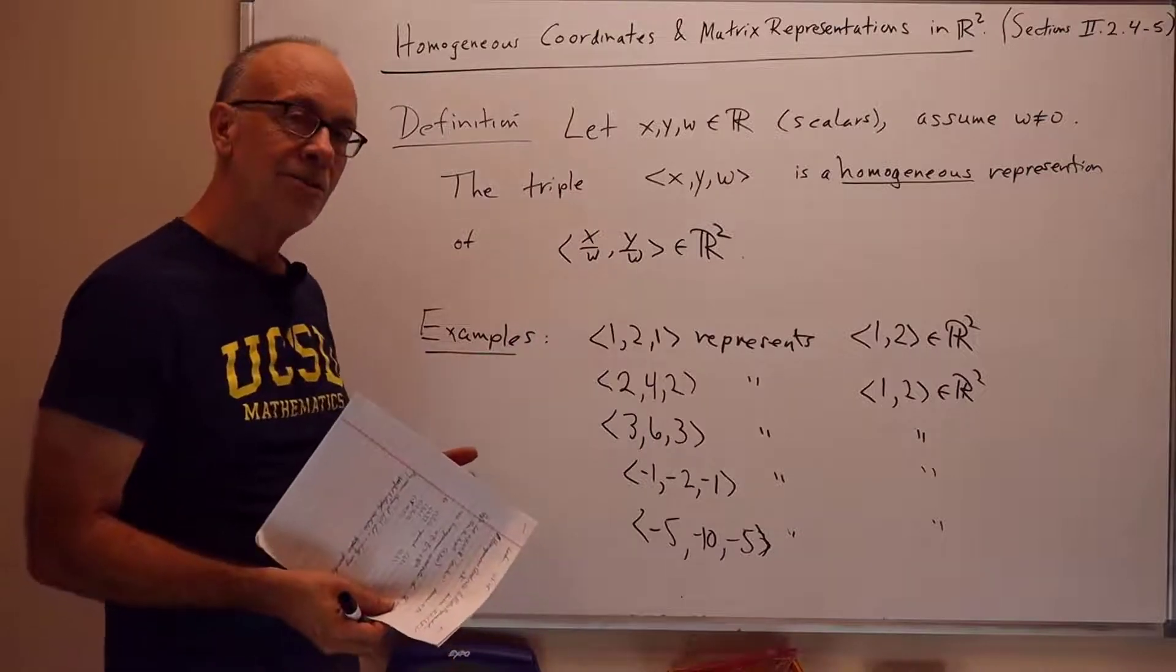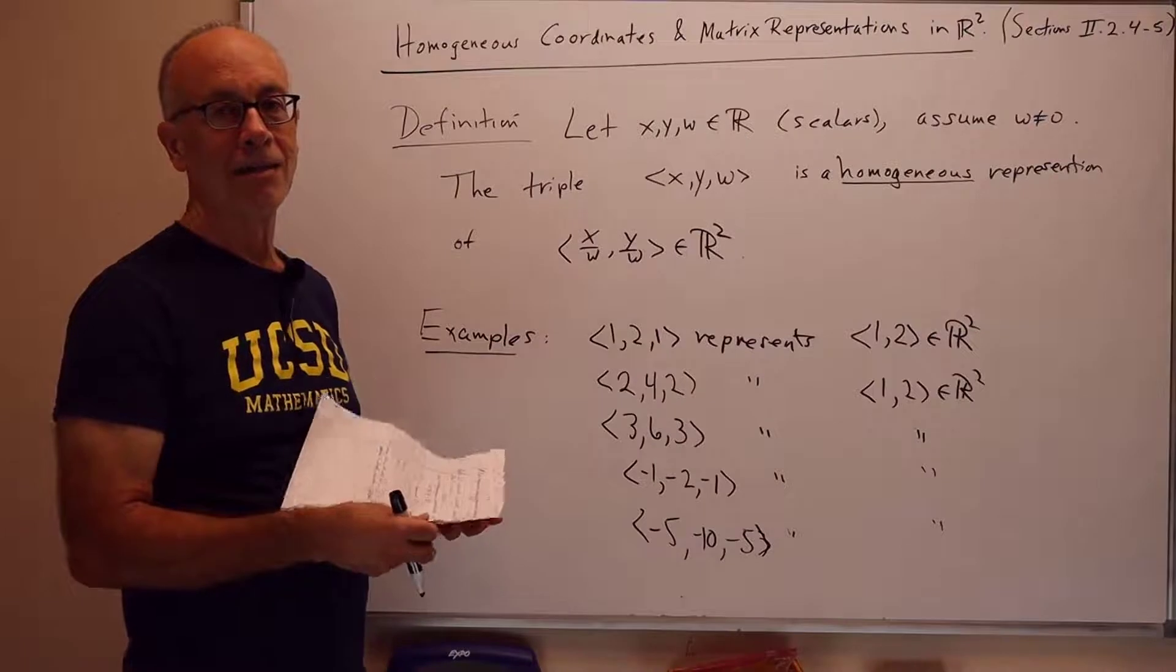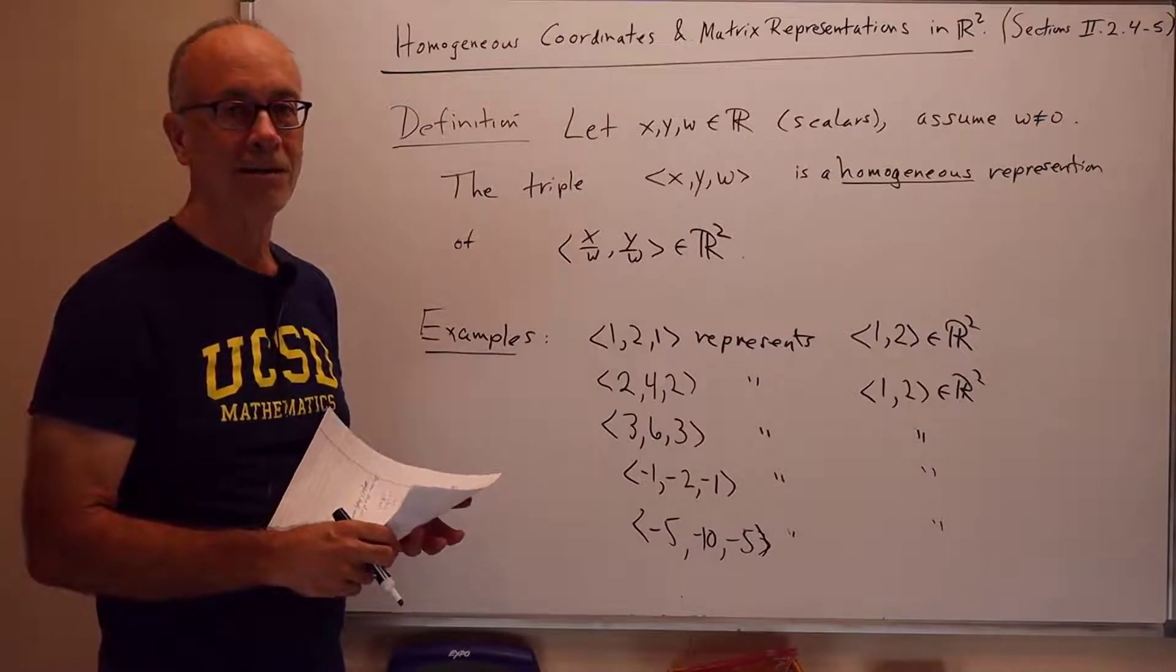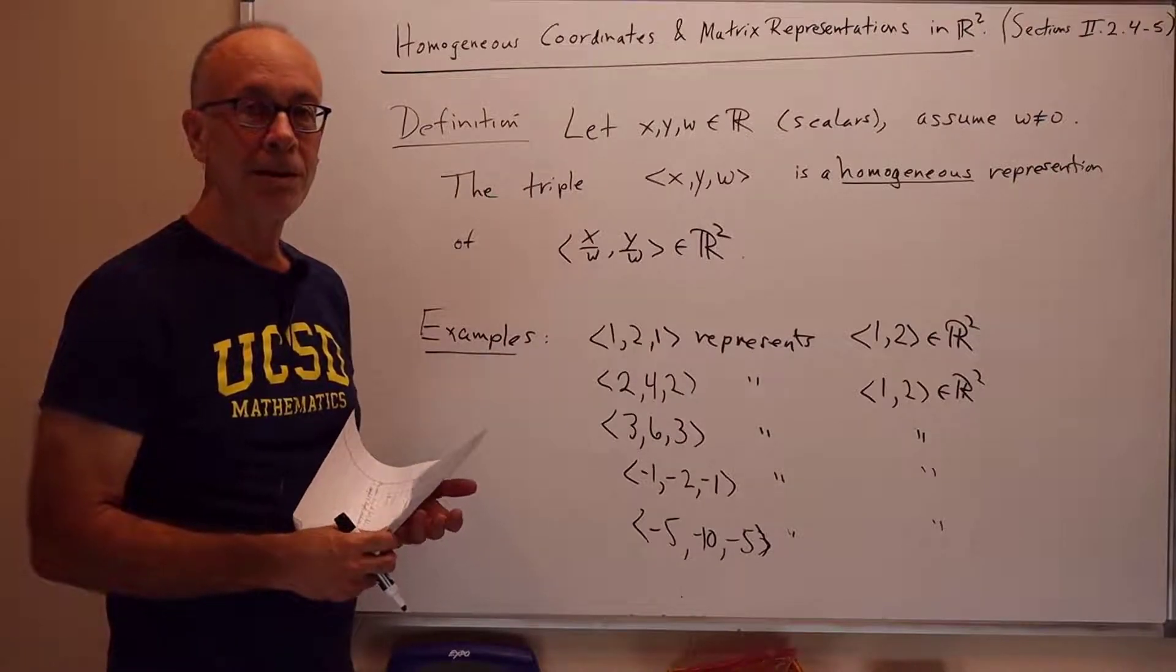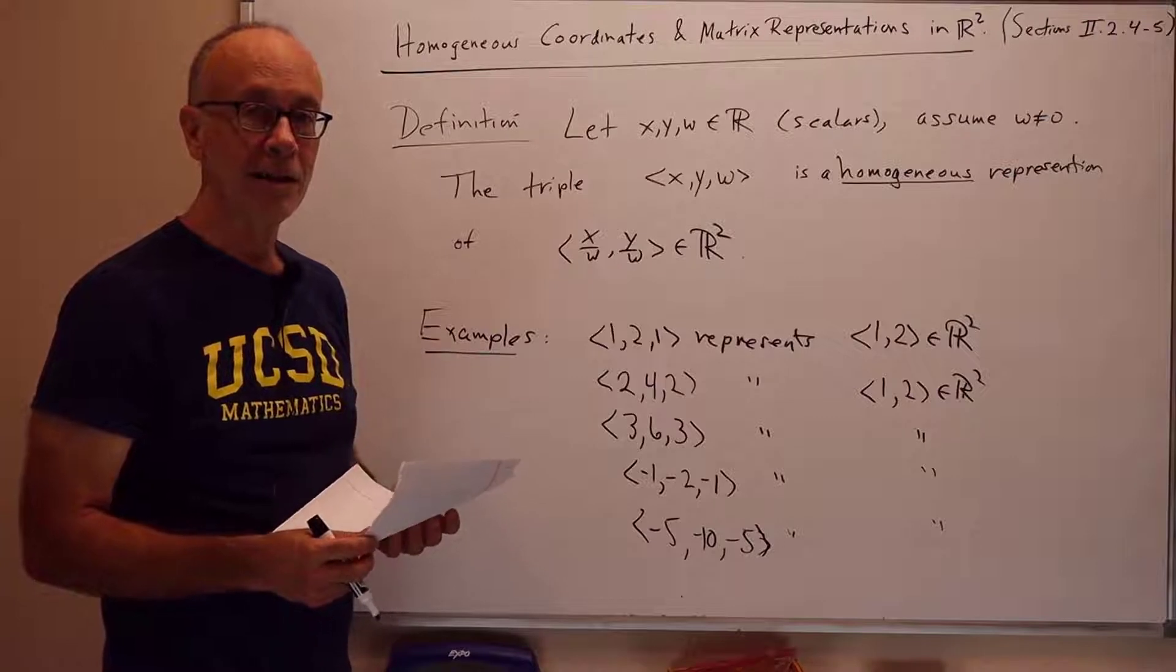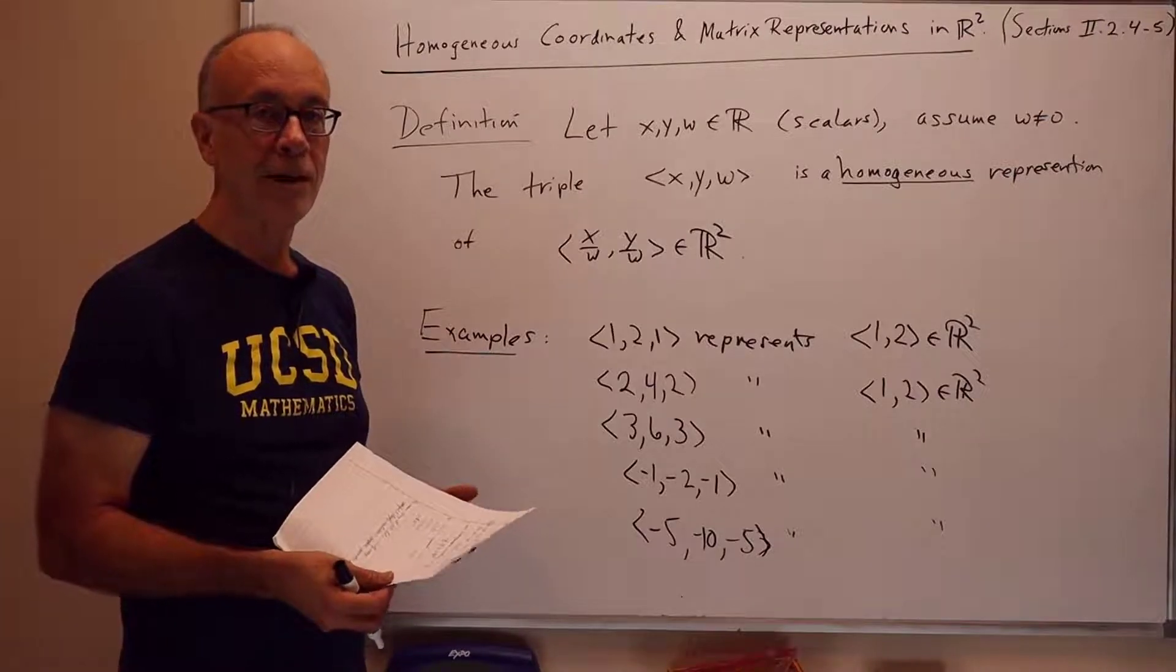So, this seems like a sort of strange thing to do at first glance. Why would we use three numbers to represent a point in R2 instead of 2? But we'll see there's going to be a lot of useful things for this, and it's deeply embedded into large parts of graphics as well.